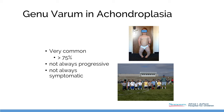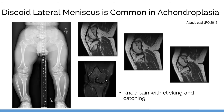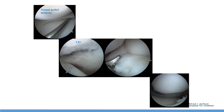Genu varum is very common, and I think we have better tools today to manage it. These kids have a very high incidence of discoid lateral menisci, so they become very symptomatic with lateral joint pain. They've got genu varum, but they've also got discoid lateral menisci, so you've got to very carefully evaluate these kids.